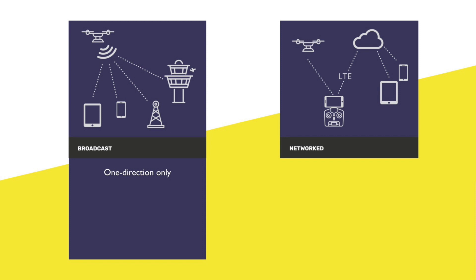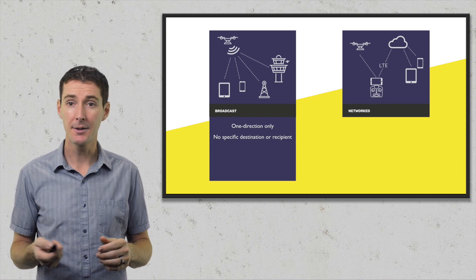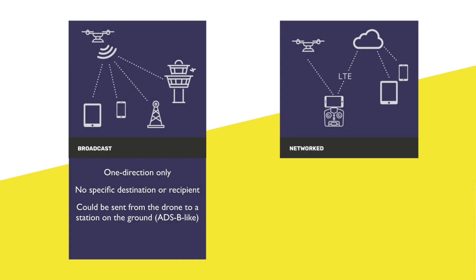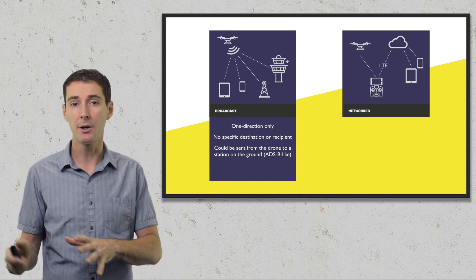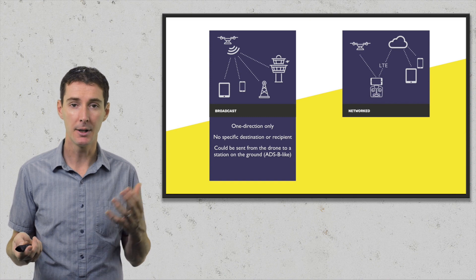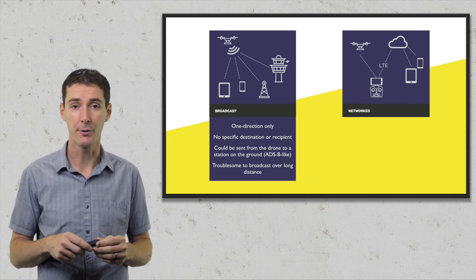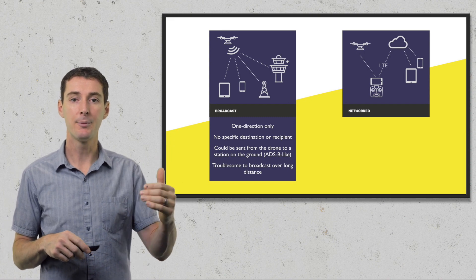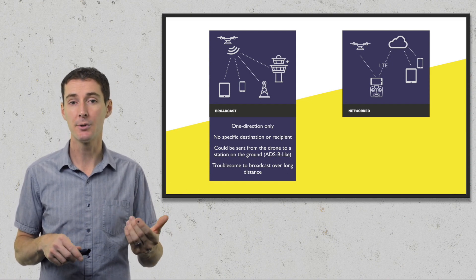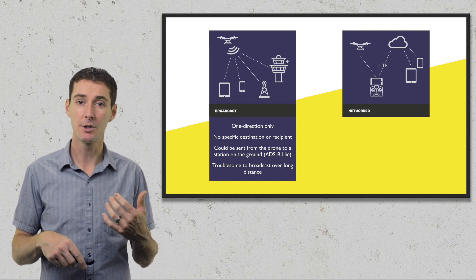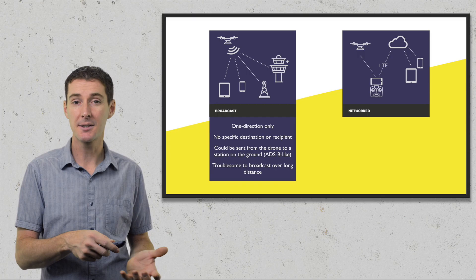Looking at broadcast versus network side by side: with broadcast, it's one direction only — the drone sends information with no specific recipient. The information could be sent from the drone to a ground station, but the FAA has already said Remote ID will not share data through ADSB, so this would require a different network and different towers, which can be costly. Broadcasting over long distances is also challenging and would require special equipment on board every drone.